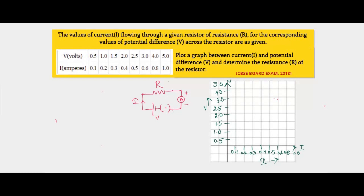These values are tabulated in a table, and we see that as the values of voltage or potential difference keep increasing, there is a corresponding change in the amount of current. Using this data, we have been asked to find out the resistance of this resistor, and we also need to plot the corresponding graph.